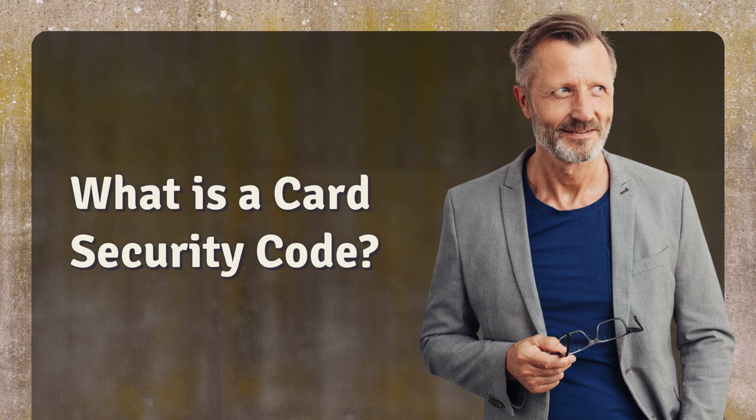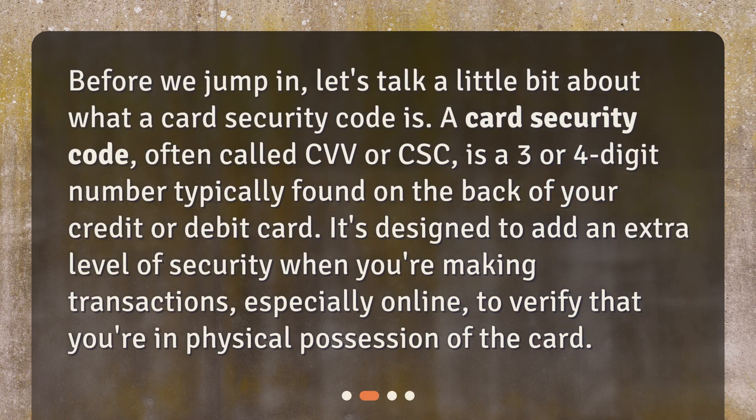What is a card security code? Before we jump in, let's talk a little bit about what a card security code is. A card security code, often called CVV or CSC, is a three- or four-digit number typically found on the back of your credit or debit card. It's designed to add an extra level of security when you're making transactions, especially online, to verify that you're in physical possession of the card.